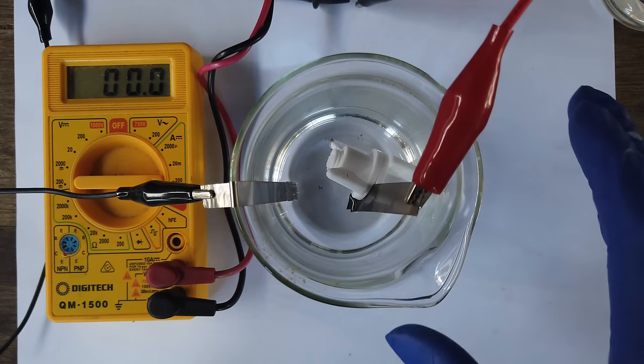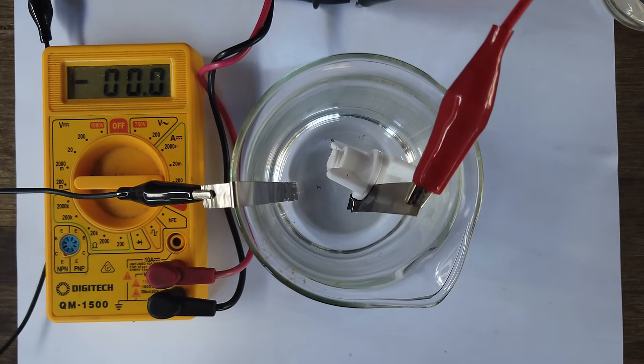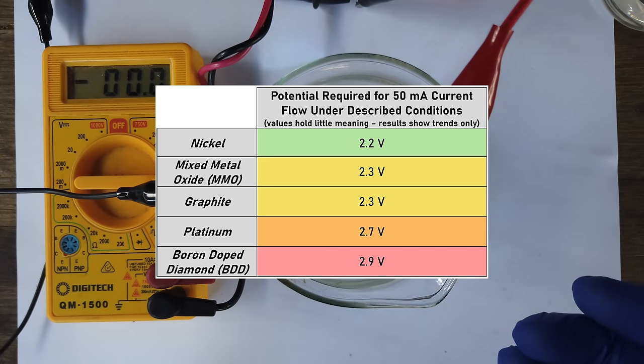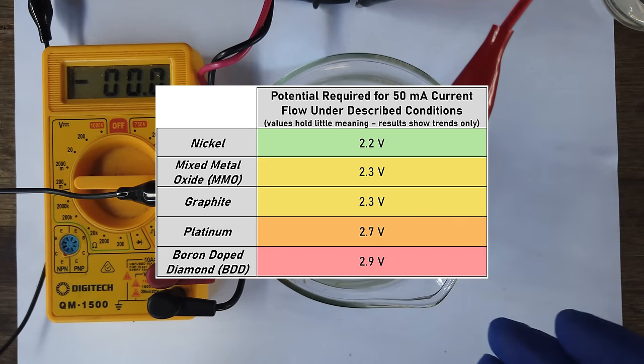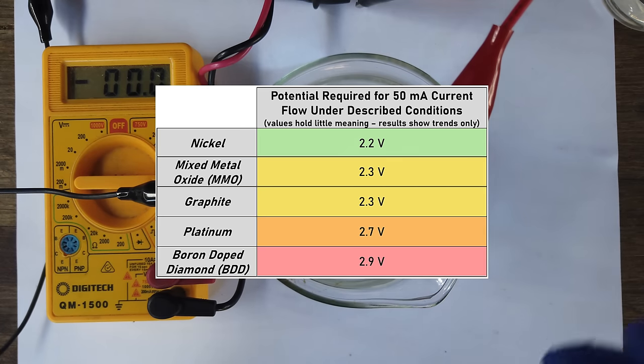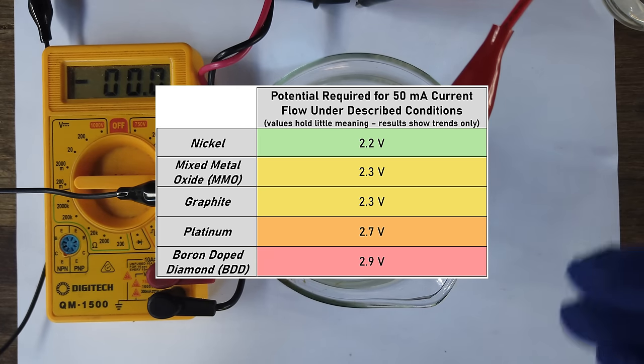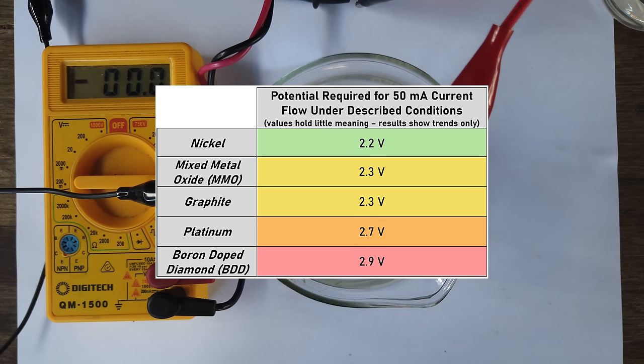Anyway, I don't want to get too in-depth with that. In these little tests, we've shown that nickel is the best at doing the oxygen evolution reaction under these conditions. Likewise, MMO and graphite are a little bit worse than that. Platinum is much worse than that. And topping the worst of the worst of doing the alkaline oxygen evolution reaction is our boron-doped diamond. We have to push the voltage really high to get it to do the reaction we want it to do.